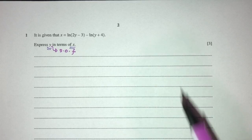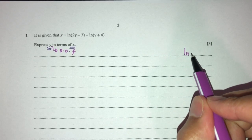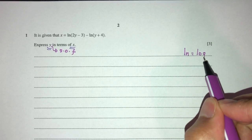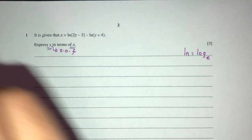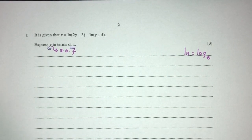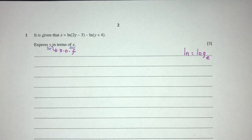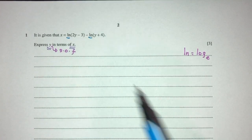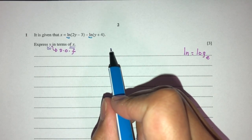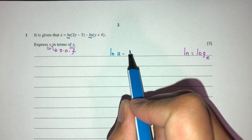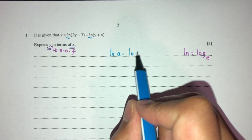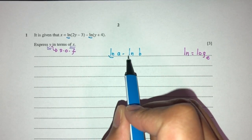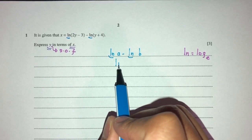One thing to know right away is ln. What is ln? ln is simply log to the base of E. Now, because these two terms are the same, they could be combined together. When you have ln of A minus ln of B, because these two are the same, they could be combined into one big ln.